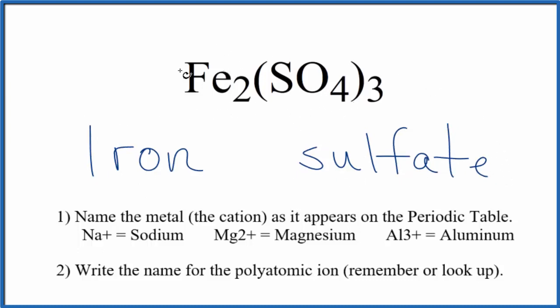But we said that iron is a transition metal, and because of that we have to take into account the charge on the iron. And the only way we figure that out is by looking at what it's bonded to. So the sulfate ion, the whole sulfate ion, has a charge of 2 minus.